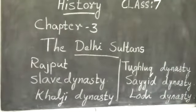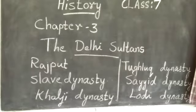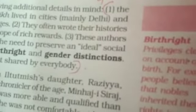The authors of Tawarikh lived in cities, especially in Delhi. They often wrote their histories for the Sultanate and received rewards in return.